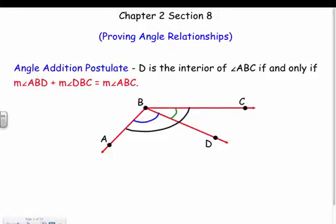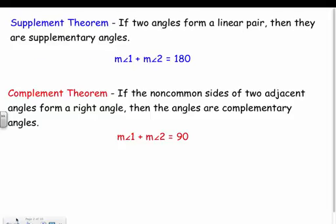If two angles are supplementary, they add up to 180. If two angles form a linear pair, they're supplementary — measure one plus measure two equals 180. Complements form a right angle and add up to 90. Remember: complements make a corner at 90°, supplements make a straight line at 180°. We've got to remember what supplements and complements are.